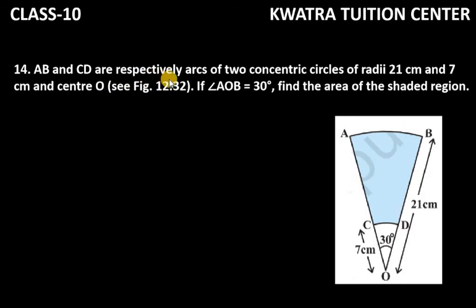It says AB and CD are respectively arcs of two concentric circles. So these are two concentric circles, which are our two sectors. You have to find this area of the shaded region.